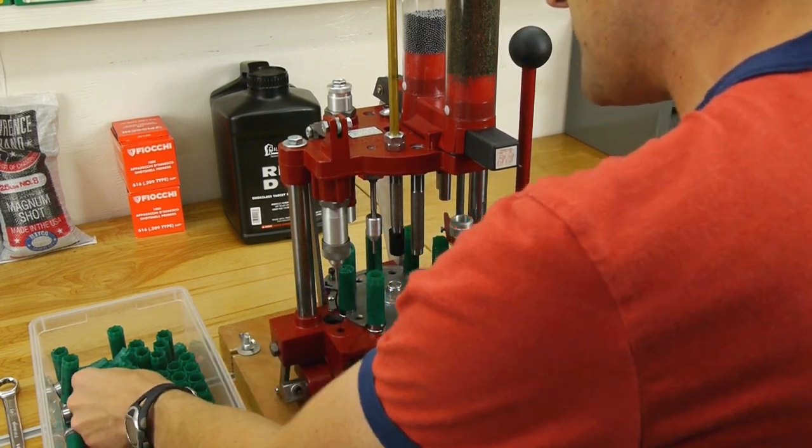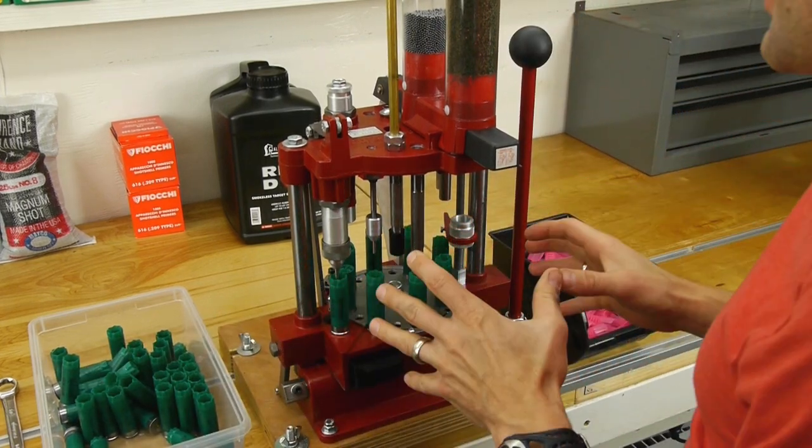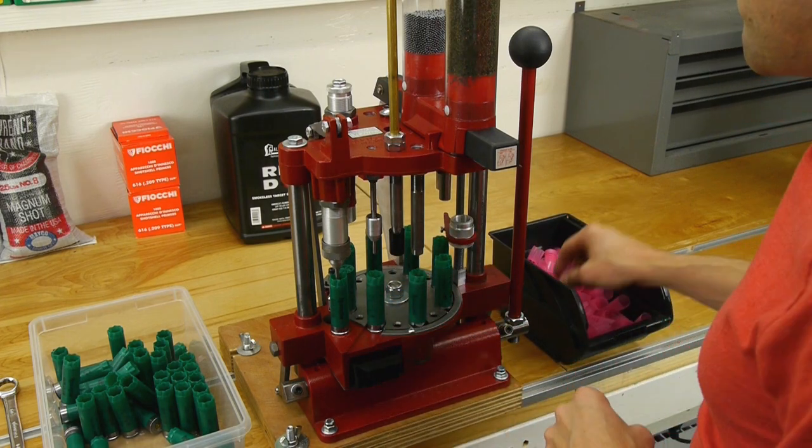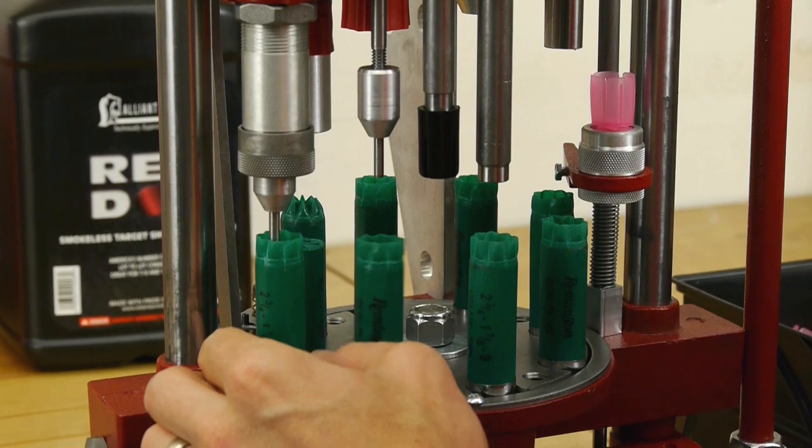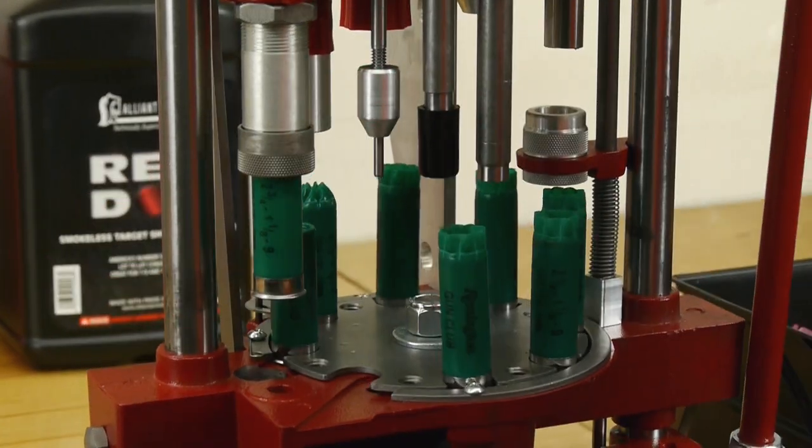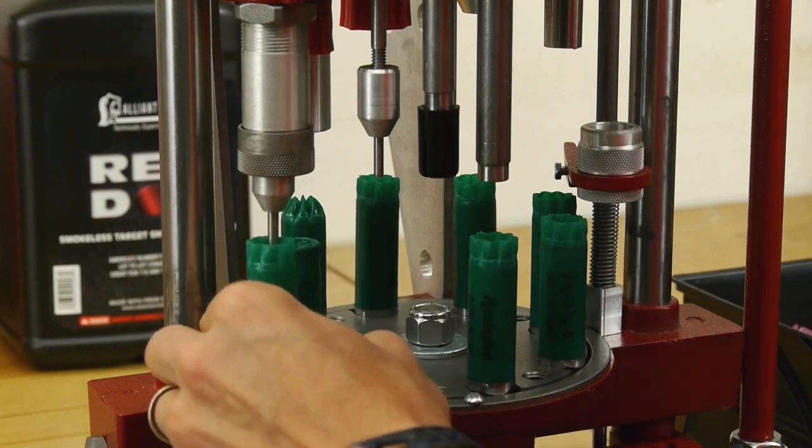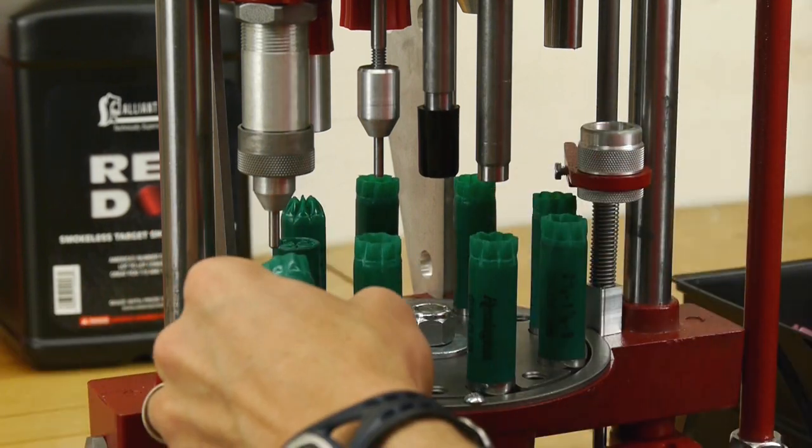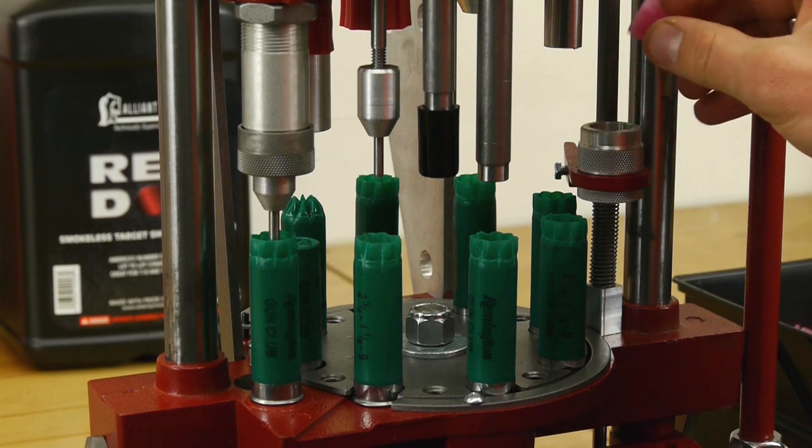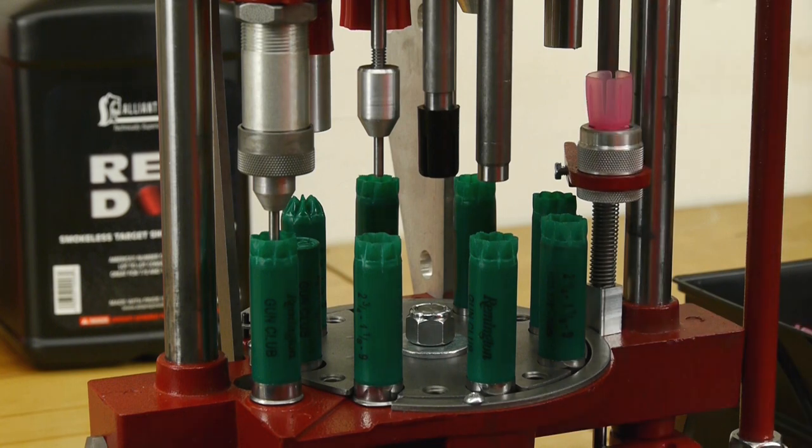Taking things fairly slow because I'm still kind of ramping up here on the operation of the press. Fold the handle down, push the handle up, pull the sizing station hull, insert another sizing station hull, new wad into the wad guide, pull the handle again.